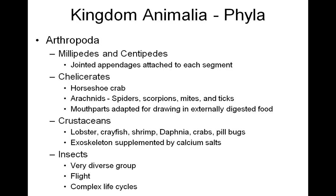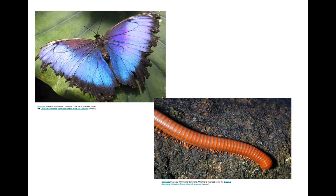Crustaceans have an exoskeleton made up of chitin, but it's supplemented by calcium salts as well. Then, finally, my huge group — the insects — a very, very diverse group. One characteristic of insects is the ability for flight in some, and also very complex life cycles that may include a complete metamorphosis or maybe an incomplete metamorphosis as it moves from the egg to the adult stage. Here's an example of a butterfly which does undergo complete metamorphosis from the caterpillar to the adult stage. And then in the lower right, here is a millipede — you see the segmented body and jointed appendages attached to each segment.